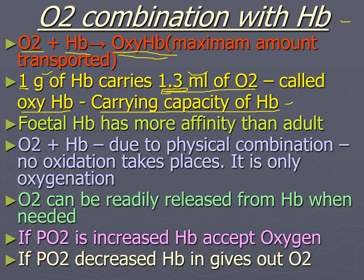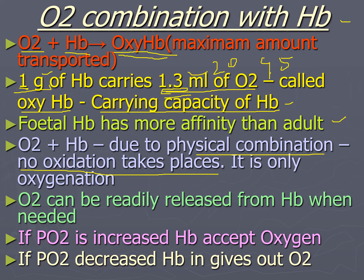That is, 20 ml of oxygen in 100 ml of blood. However, blood with 15 gram percent hemoglobin carries only 19 ml of oxygen per 100 ml of blood. The oxygen carrying capacity of blood is only 19 ml percent because hemoglobin is not fully saturated — it is saturated only about 95%. Fetal hemoglobin has more affinity for oxygen than adult hemoglobin. The combination of oxygen with hemoglobin is a physical combination, so no oxidation takes place — it is only oxygenation.